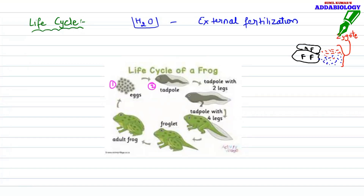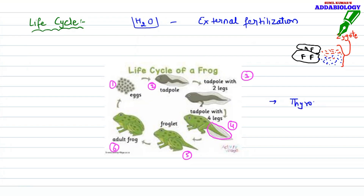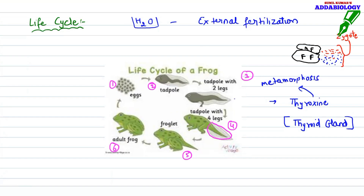After mating, eggs hatch out into tadpole. The tadpole slowly develops two legs, then four legs — the hind limb first. By the help of hormone thyroxine, the tail will dissolve, it undergoes metamorphosis, forms a froglet, and finally the froglet develops into an adult frog. Adult frogs can only live on land. Thyroxine, released from the thyroid gland, is the key hormone driving metamorphosis.